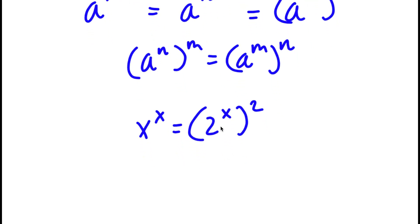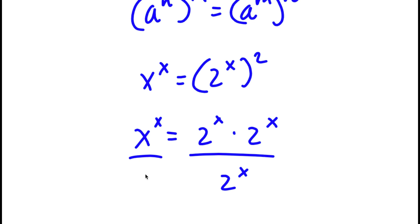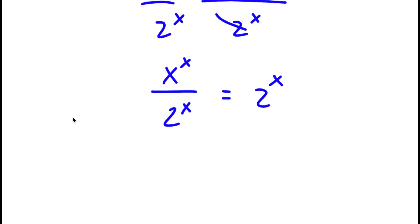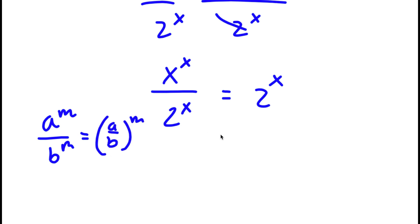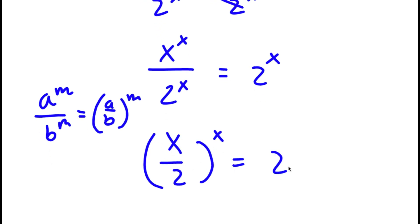Now, 2 to the power of x squared, I'm going to rewrite this as 2 to the power of x times 2 to the power of x. On both sides, I'm going to divide by 2 to the power of x. These two cancel out, and I'm left with x to the power of x over 2 to the power of x is equal to 2 to the power of x. Using the rule a to the power of m over b to the power of m equals a over b to the power of m, this becomes x over 2 to the power of x, which equals 2 to the power of x.